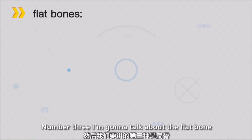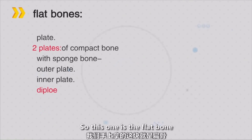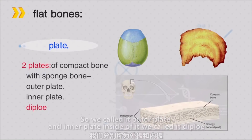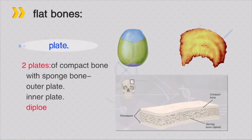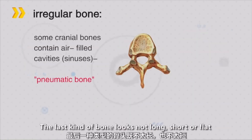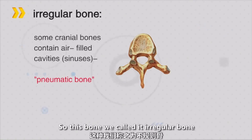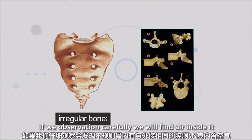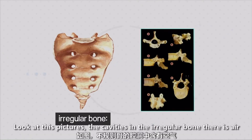Number three, the flat bone — for example, the scapula. Be careful, look at this picture. You will find we have two plates: the outer layer is compact bony substance, and inside is sponge bony substance. So we call it outer layer plate and inner plate — three-layer substance. The last one, irregular bone: not longer, not shorter, not flat. This bone looks complex. We call it irregular bone. For example, the vertebral bone. If we observe carefully, we will find cavities — the sinuses inside. That is irregular bone.